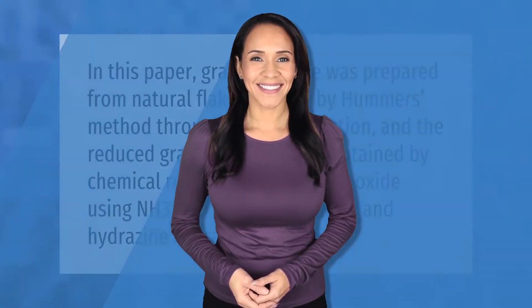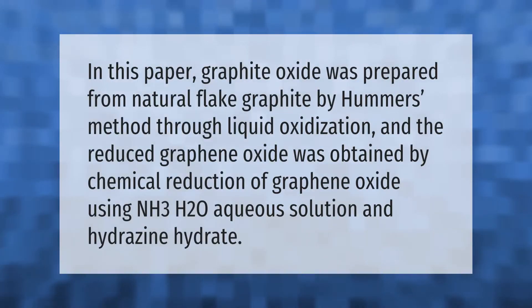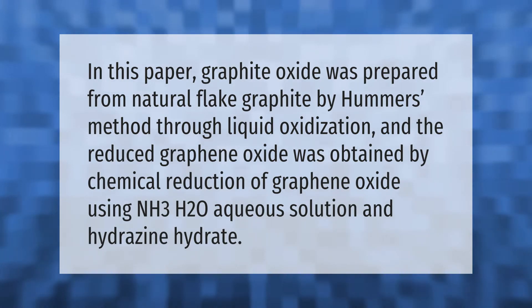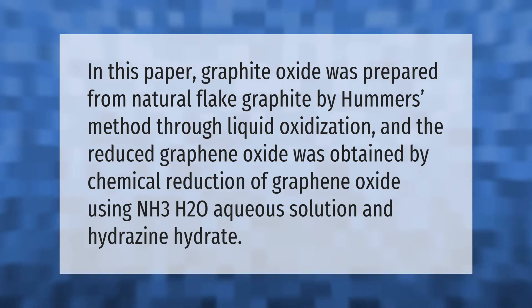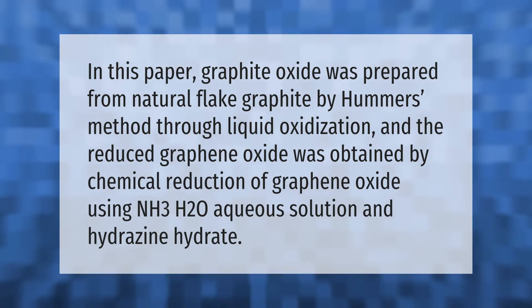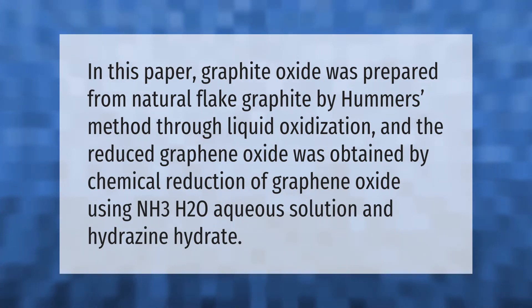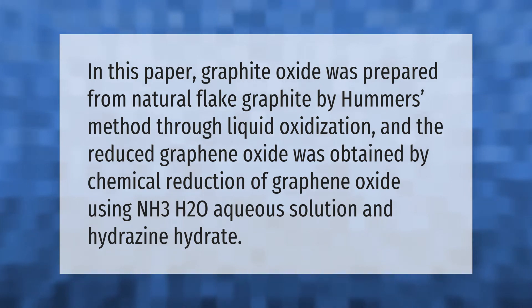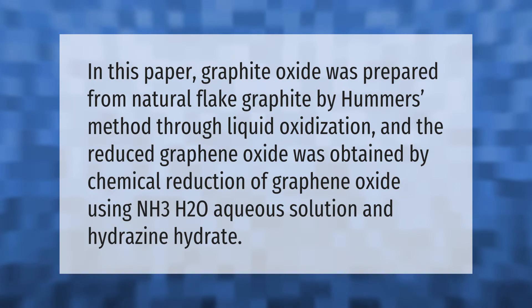In this paper, graphite oxide was prepared from natural flake graphite by Hummer's method through liquid oxidization. The reduced graphene oxide was obtained by chemical reduction of graphene oxide using NH3·H2O aqueous solution and hydrazine hydrate.